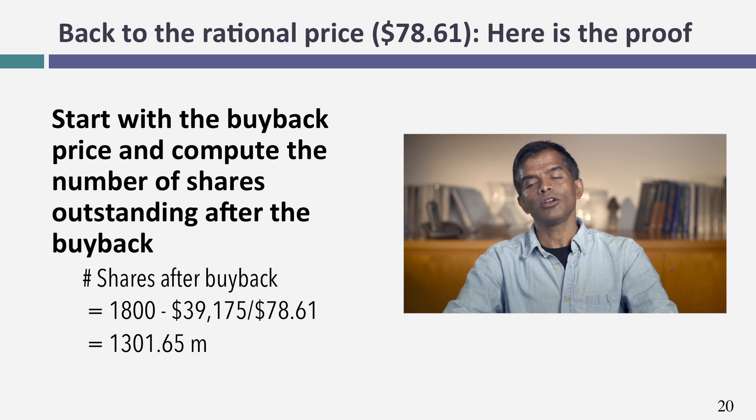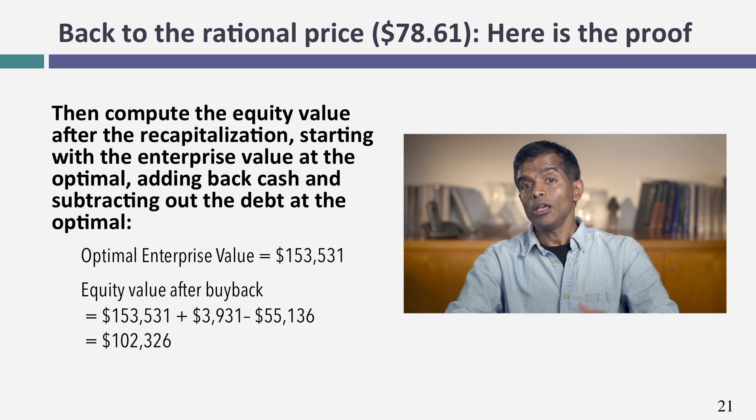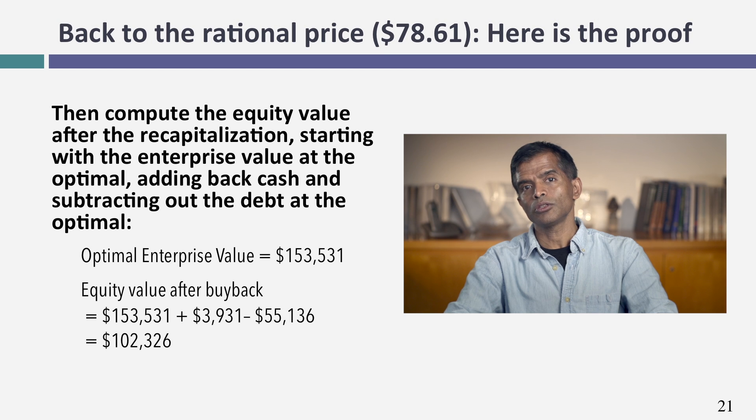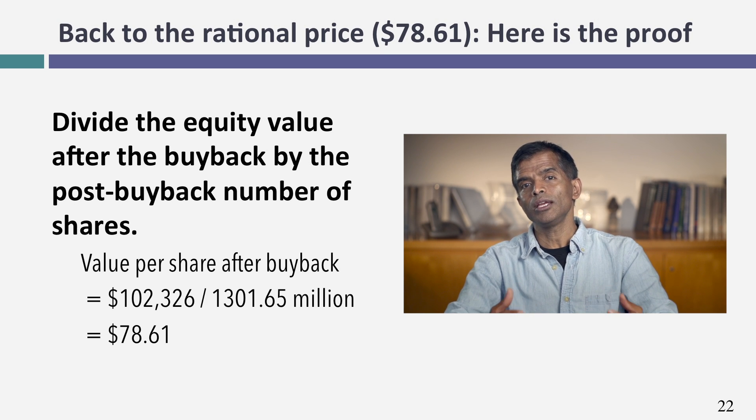If instead you buy shares back at $78.61 — the rational price — the remaining shares will be only 1,301.65 million. The remaining equity value divided by those shares also gives $78.61 per share. It's rational in the sense that everybody gets exactly $78.61, whether they sell back or stay. So why should we do it? An increase of about $10.90 per share, roughly a 15% stock price increase — a pretty good gain from moving to the optimal debt ratio.